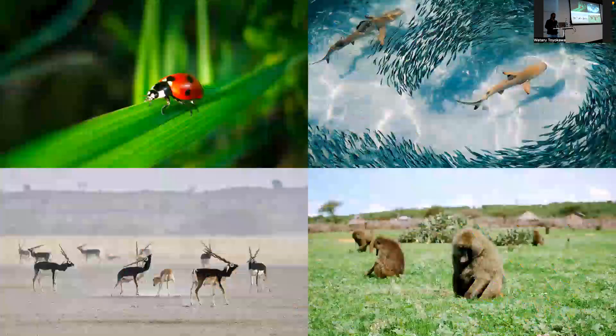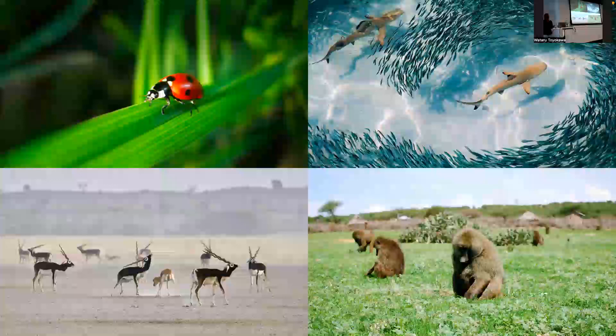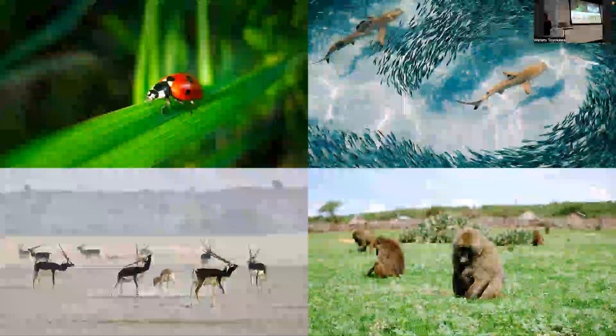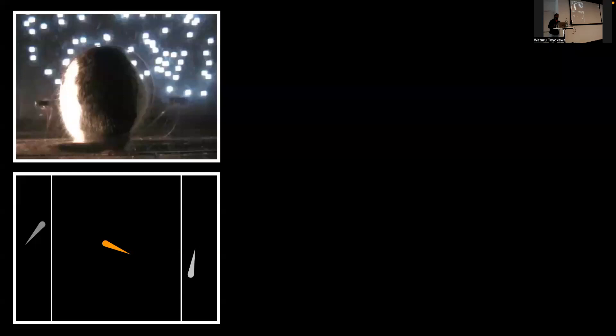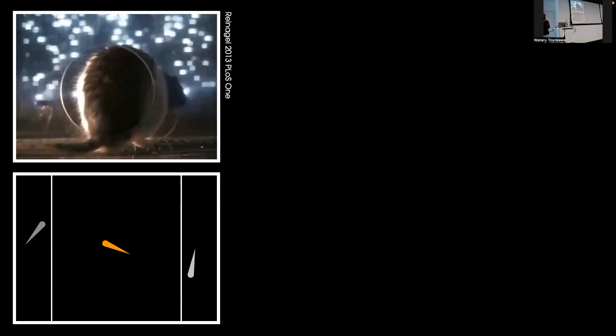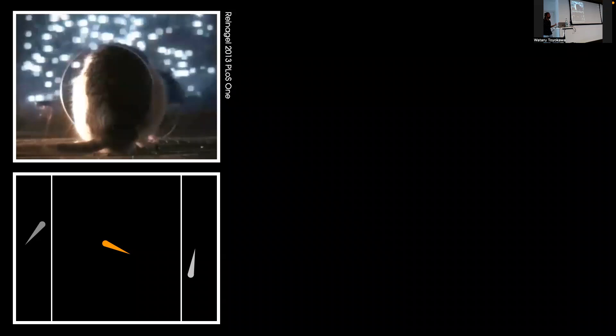Whether you're an insect trying to find a tall blade of grass to perch on, a fish deciding which conspecifics to school with, or a primate trying to find a foraging patch, most animals at some point have to make decisions on the go. This is the dot motion paradigm in neuroscience, where a rat decides which direction the majority of dots are moving and receives a juice reward for correct decisions.